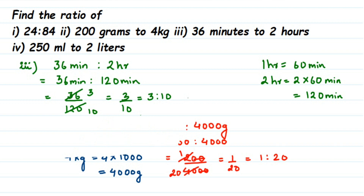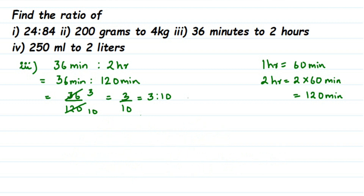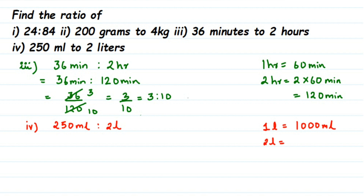The last question: we have 250 ml is to 2 liters. The units are not the same, so we convert liters into milliliters. Since 1 liter = 1000 ml, 2 liters = 2 × 1000 = 2000 ml. When converting a higher unit to a smaller unit, you multiply.